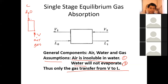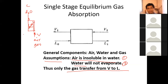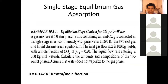Just remember those two assumptions for gas absorption solutions. In essence, only the gas transfers from one stream to the other — from B to L. Let's try to solve Sample 10.3-1: equilibrium stage contact for carbon dioxide, air, and water.